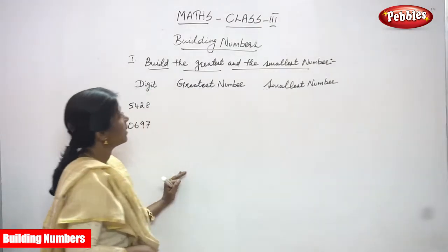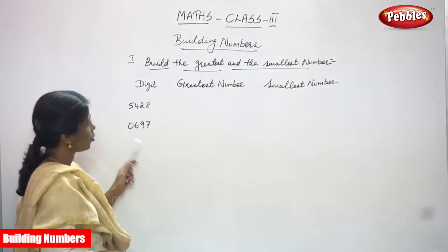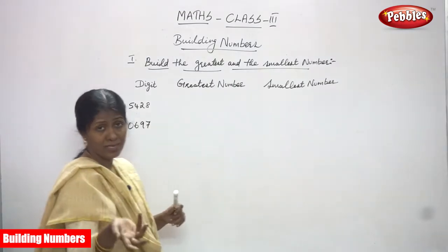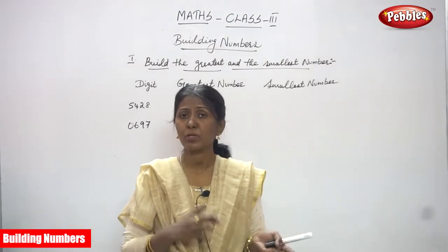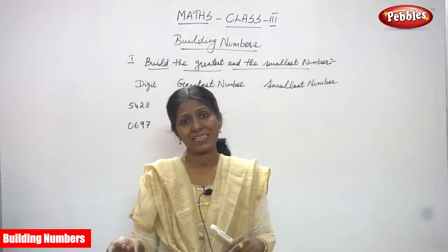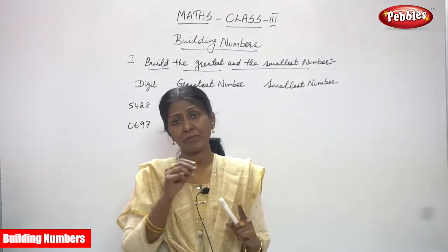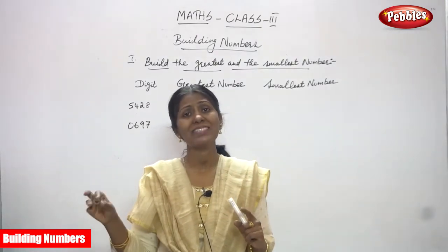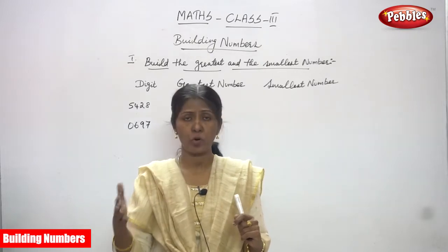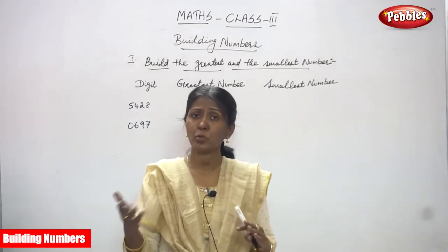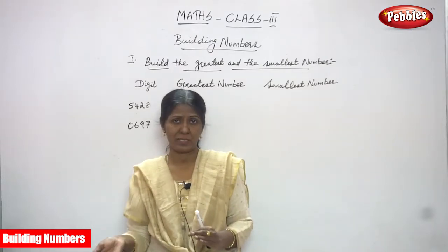To build the smallest number, we arrange the numbers in increasing order — that is smallest to greatest. That is the only difference between these two. Greatest number means we write all the numbers in descending order — that is decreasing order, greatest to smallest.